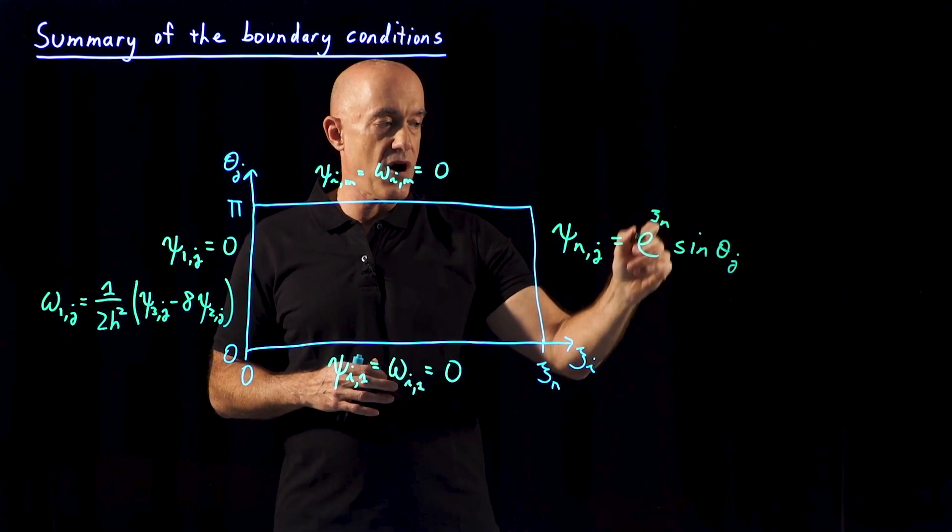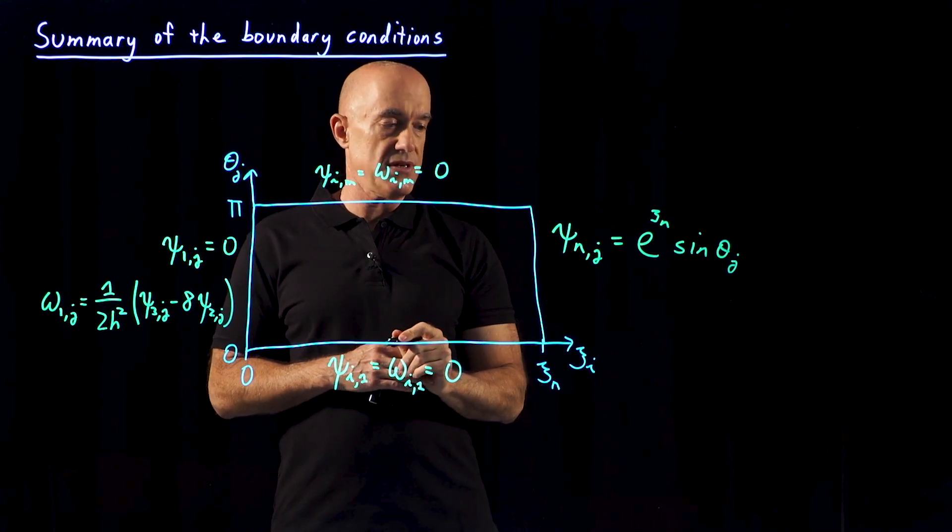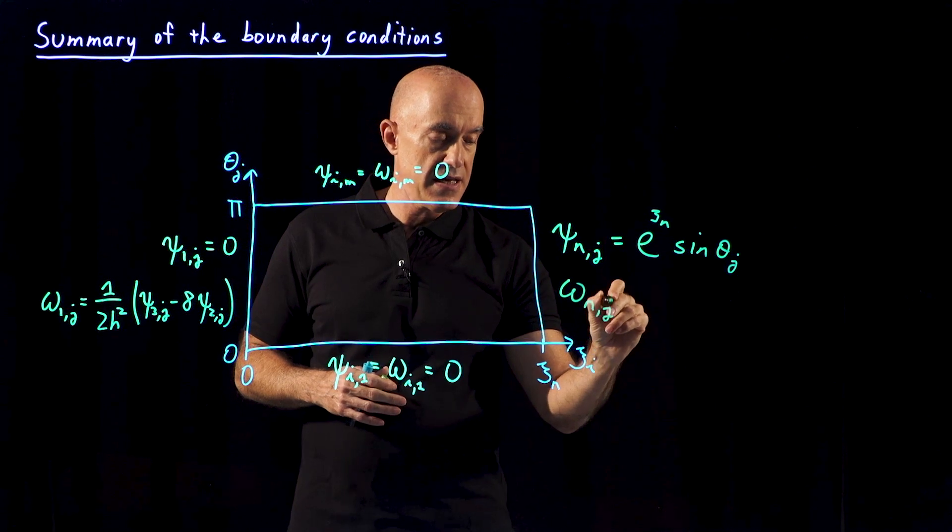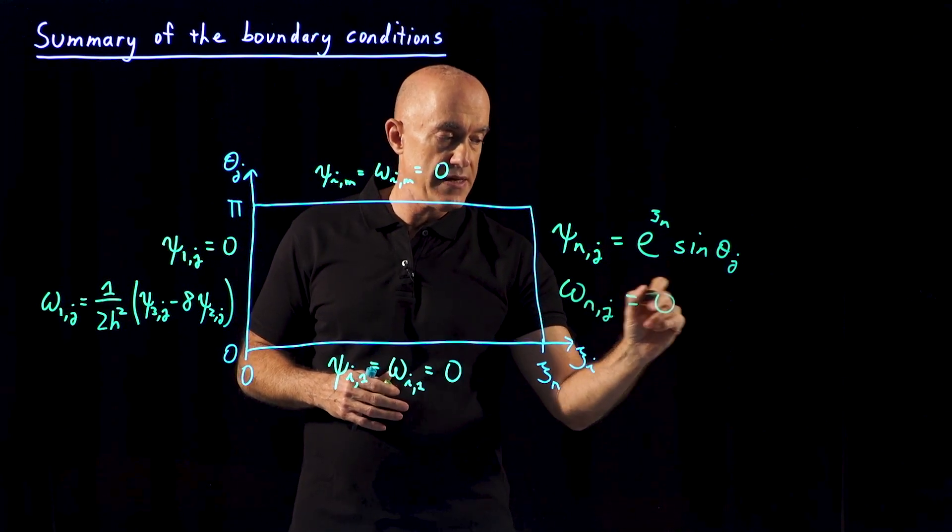We're at the farthest distance away from the cylinder, and we take the simple boundary condition on the vorticity in the free stream to be 0.